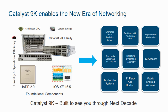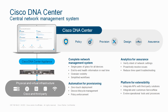The 9K, as mentioned previously, runs on IOS XE 16.5 with a UADP 2.0 chip. They have an x86-based CPU and large storage. Key capabilities include Encrypted Traffic Analytics (ETA), third-party app integration, fabric-enabled wireless, SD-Access, programmability, and automation. You can build the entire DNA solution with these devices.